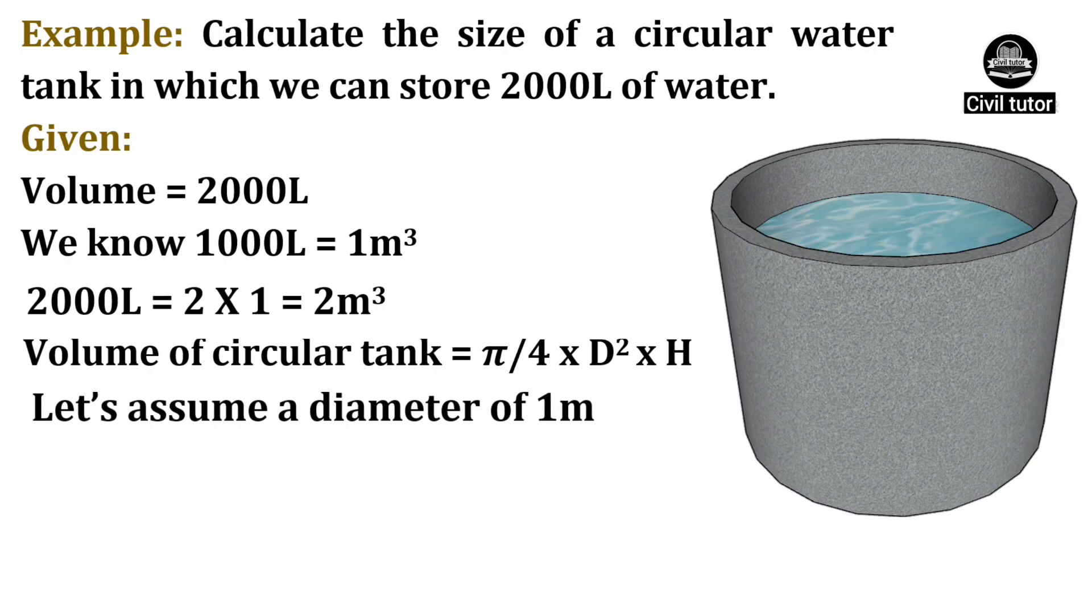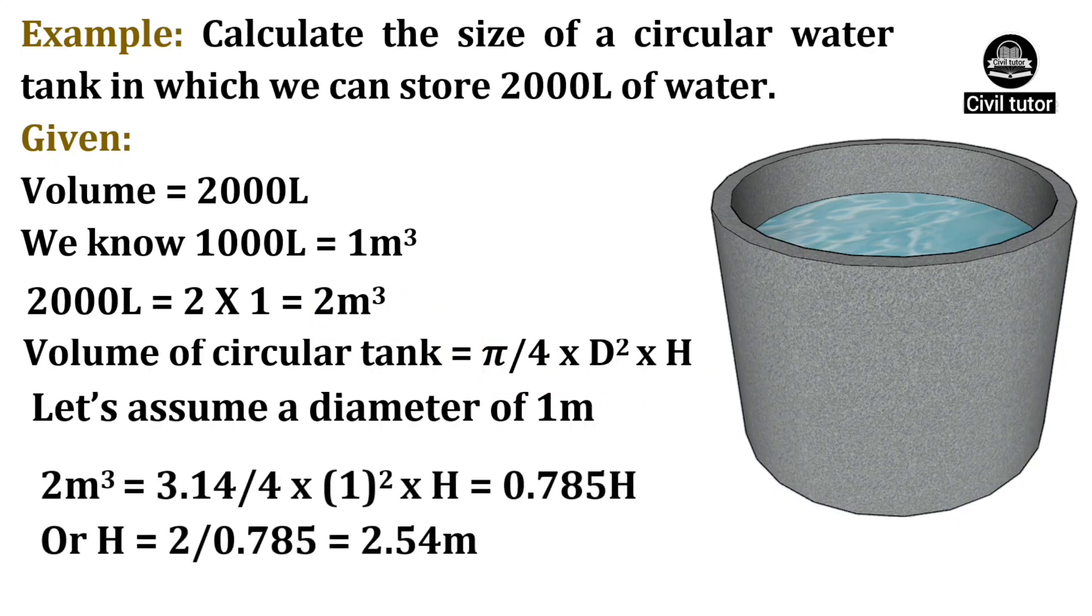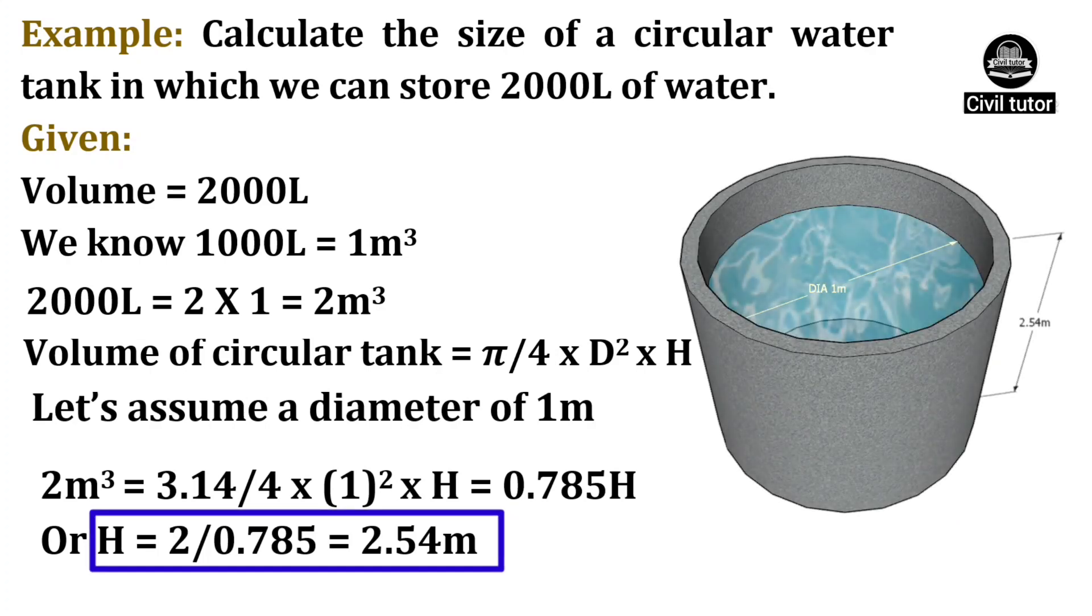Let's assume a diameter of 1 meter. We have volume equal to pi by 4 d square into h. Since the volume is given as 2 meter cube, the diameter is assumed as 1 meter. On simplifying further, the height of this tank will be equal to 2.54 meter. Hence, the circular water tank which can store 2000 liters of water has a height of 2.54 meter and diameter 1 meter.